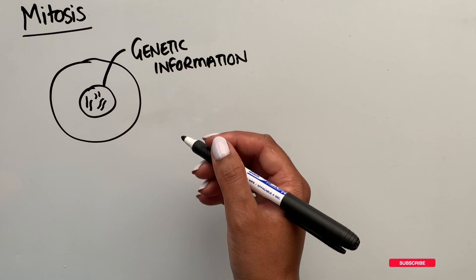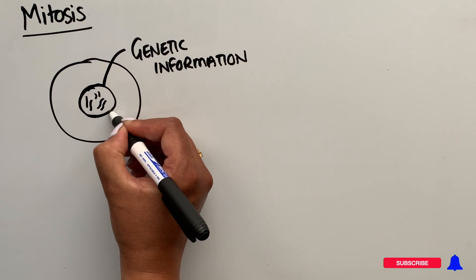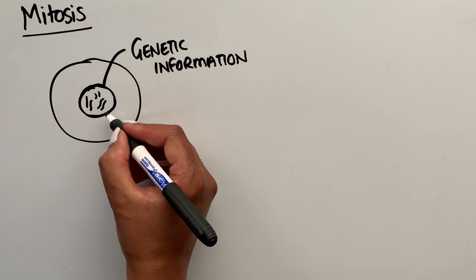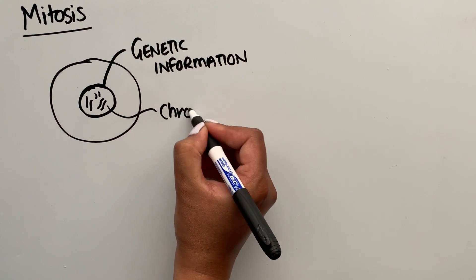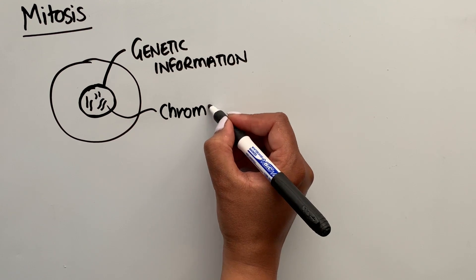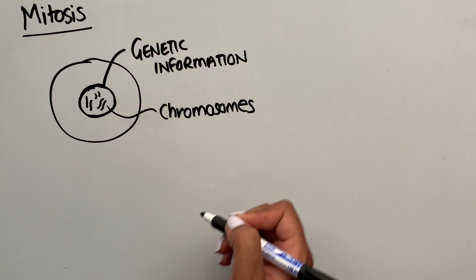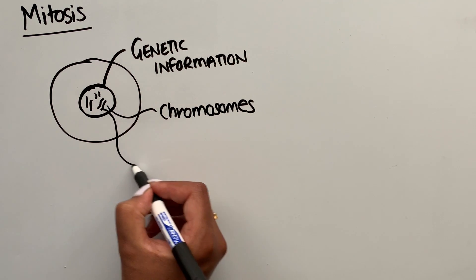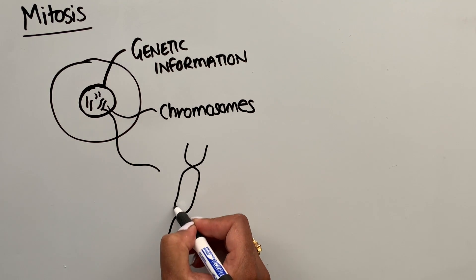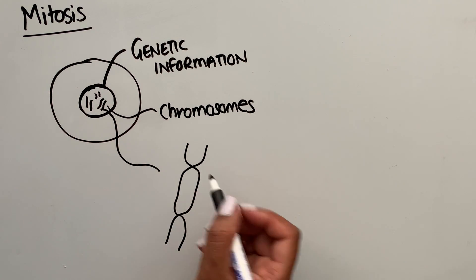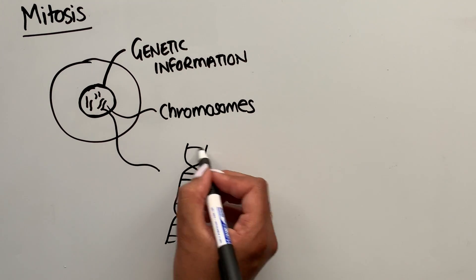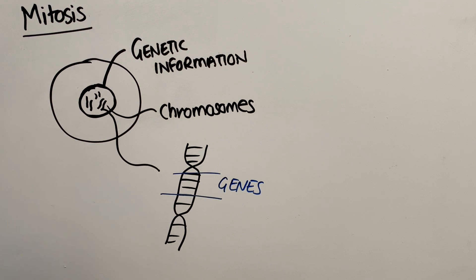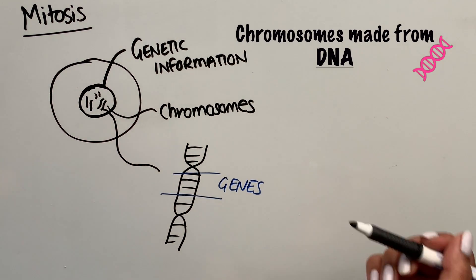All of the information that we need for our cells to divide is in the nucleus. We have our genetic information inside the nucleus, and this genetic information is held on our chromosomes. In humans we have 46 chromosomes, or 23 pairs. Because we have 23 pairs, one chromosome comes from the mother and one comes from the father. A chromosome is a section of DNA that has been coiled up. A small section of DNA would be a gene.